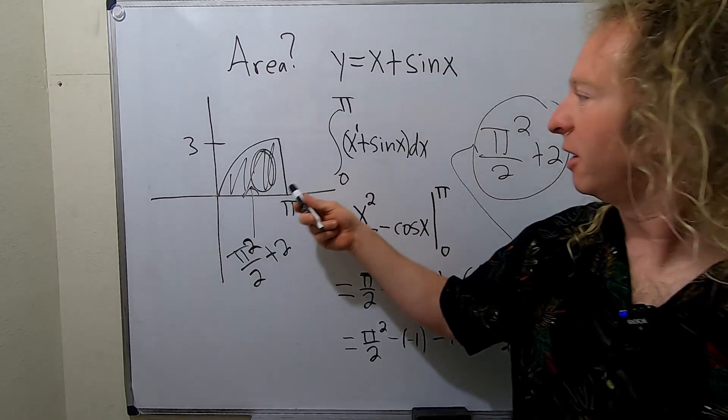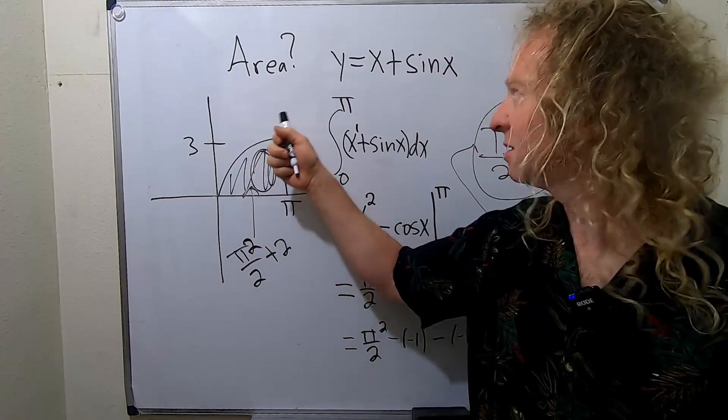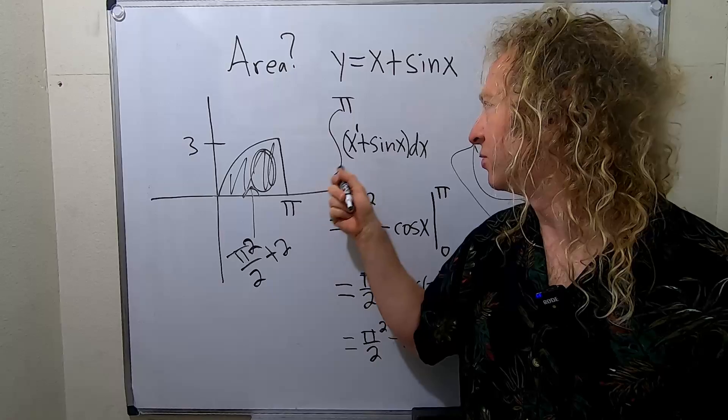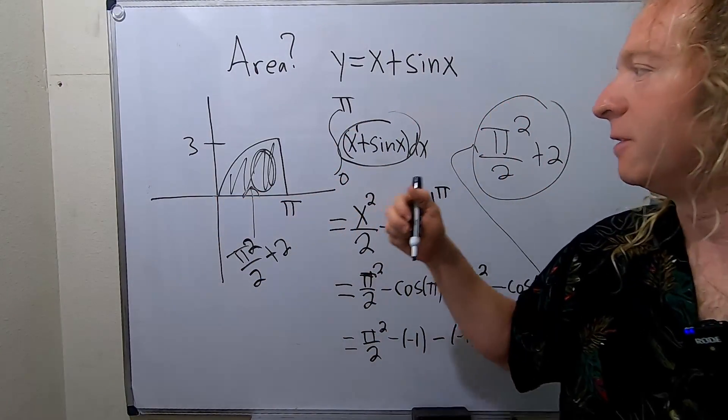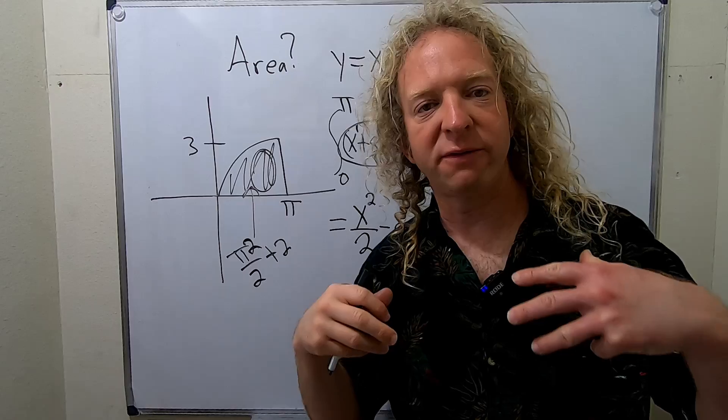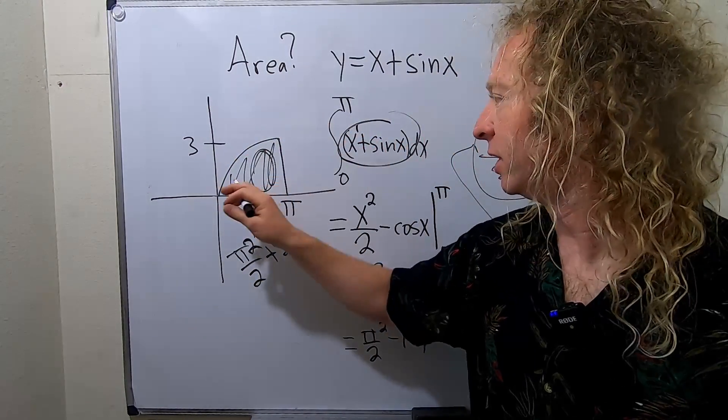So whenever you have to find an area of a function that's above the x-axis, all you do is integrate from left to right. You take your function and just integrate from here to here. The reason is if you remember in the construction of the Riemann integral, this is actually equal to a limit.